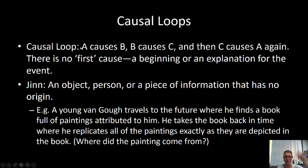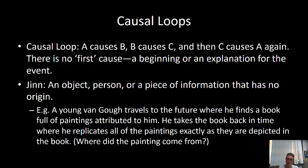GIN are a type of causal loop, but specifically an object, person, or piece of information that has no origin. You could say every causal loop is a GIN in some sense — an object, person, or piece of information that just exists, where you ask where it came from, and the explanation you give is circular.